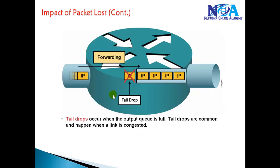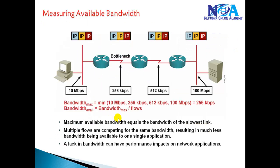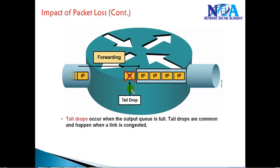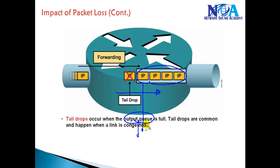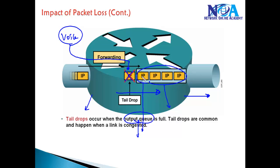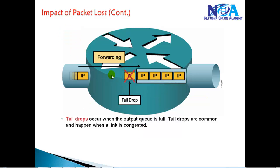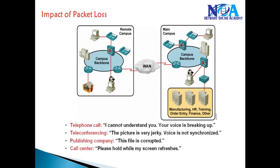The second problem is packet loss. Packet loss generally happens when the router receives packets and tries to send them. Based on the output queue and the number of packets it can hold, once the queue reaches its maximum limit it will automatically start dropping packets. For critical traffic like voice, we don't want that to happen.